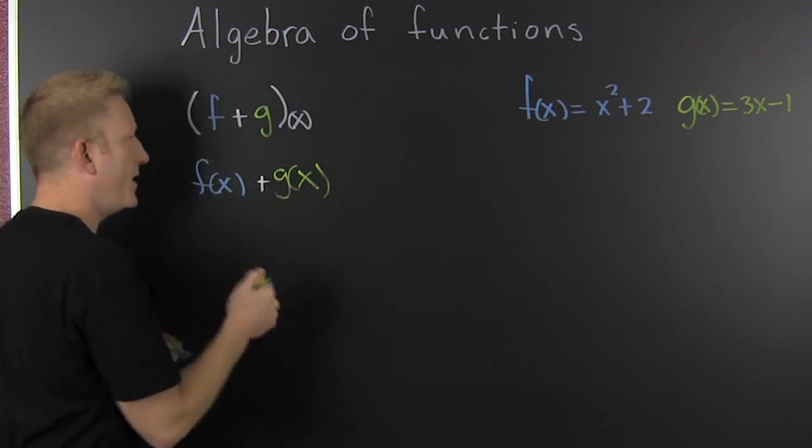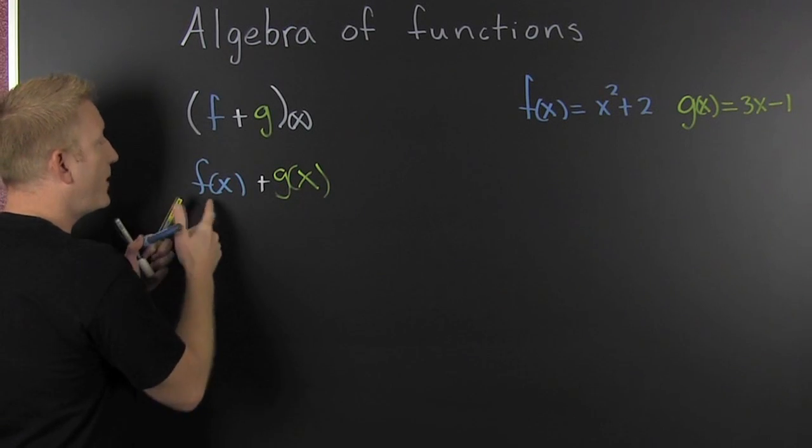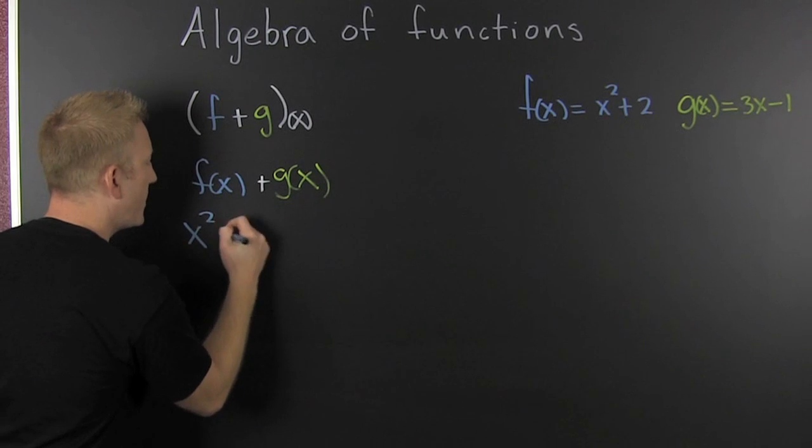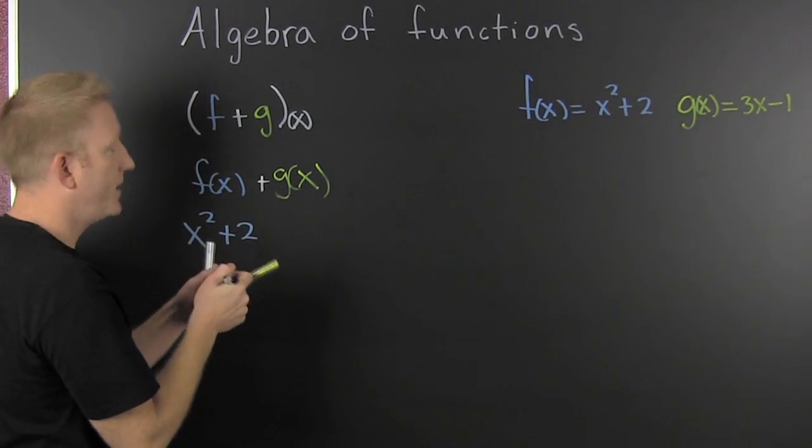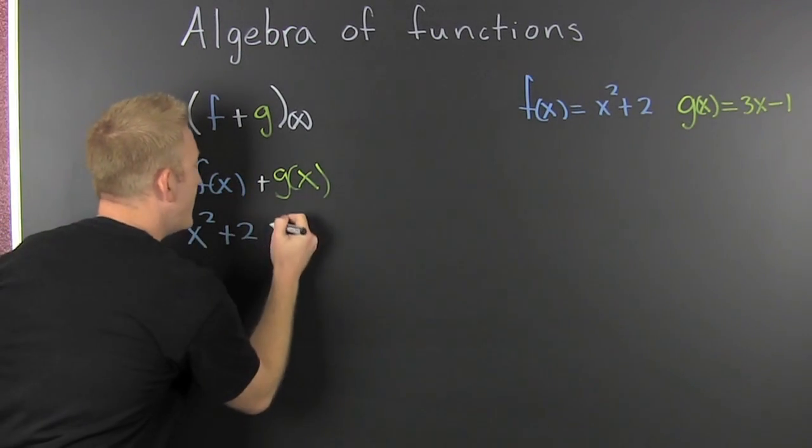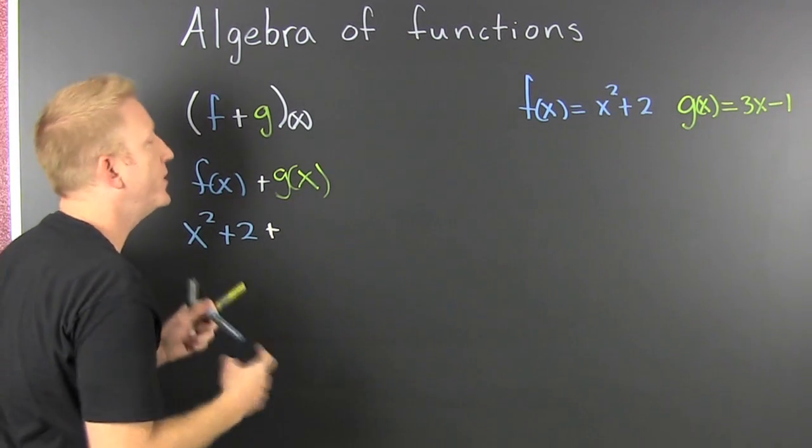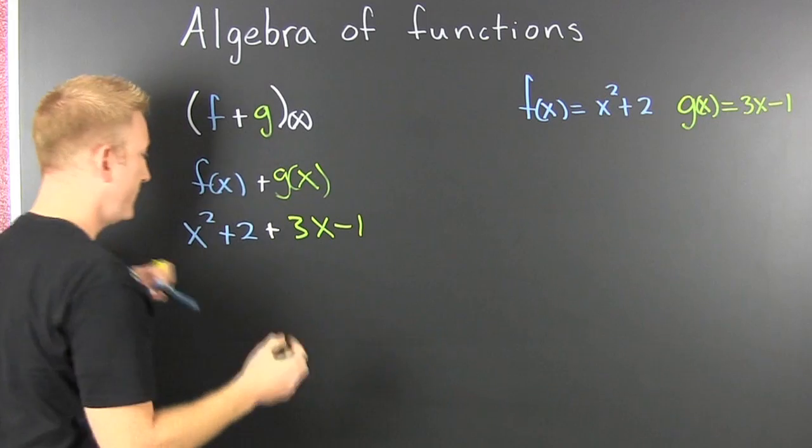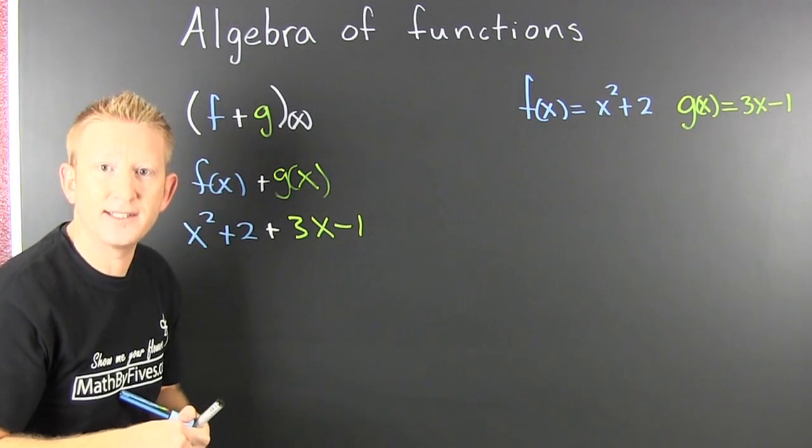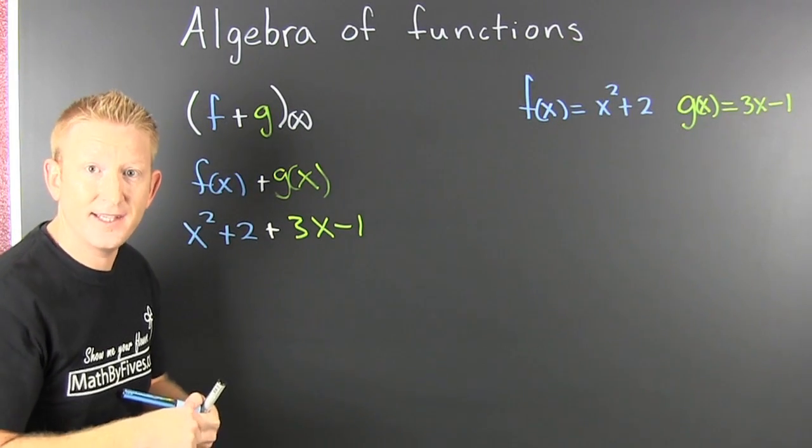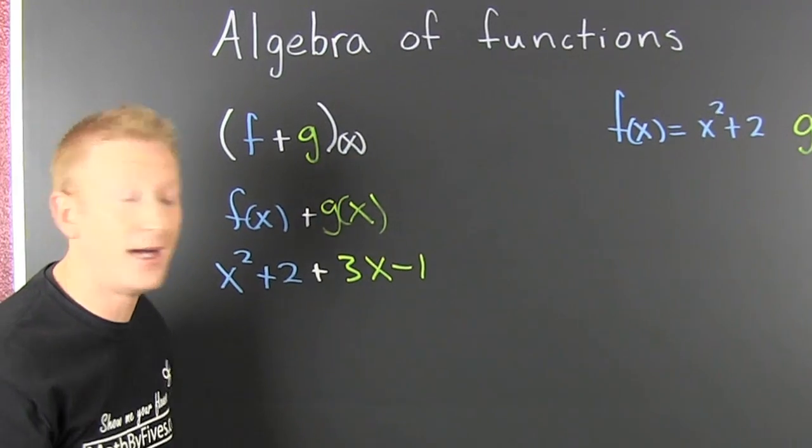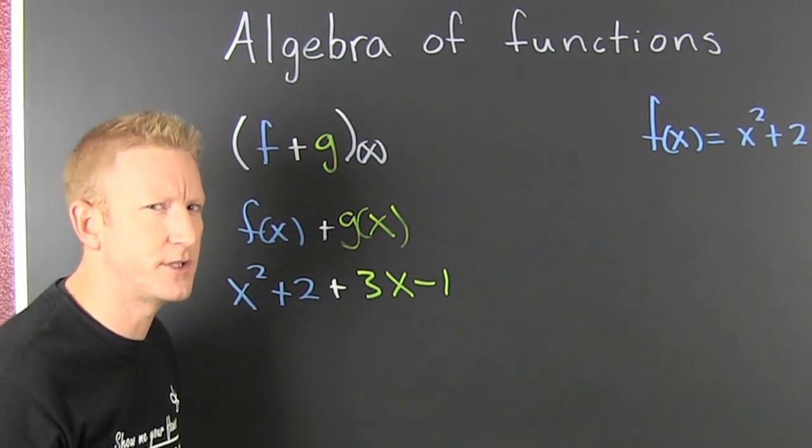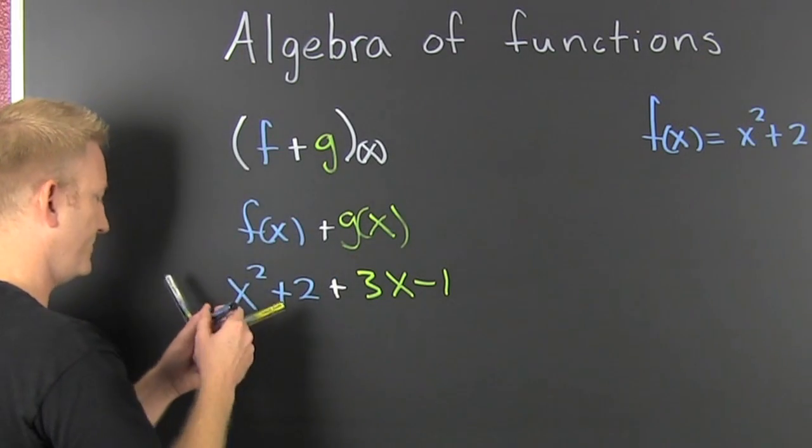Everywhere I see that f, I'm gonna put in x² + 2. And then what do I do? I'm gonna add it to g(x), which happens to be 3x - 1. And then I'm gonna gather, collect, and combine. I want to combine like terms—terms with exactly the same variables raised to exactly the same powers.